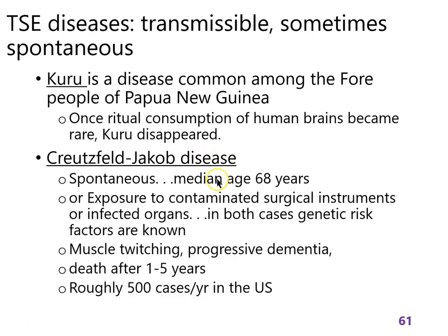Creutzfeldt-Jakob disease is again the spontaneous disease. You can literally go six decades or more without this happening, and then boom, it happens. There was also a case where a surgeon operating on a CJD patient contaminated a scalpel by cutting through a neuron, and then accidentally cut themselves with the same scalpel — and they got Creutzfeldt-Jakob disease, leading to progressive loss of muscle control, dementia, and death. This is rare — about 500 cases per year in the US — but it's spectacularly bad.